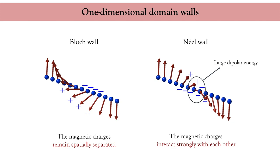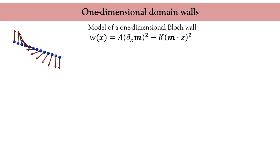Of course, this statement is not general and strongly depends on the details of the energy landscape, as we will see. So let's focus on the Bloch wall and see how it emerges from the competition between exchange and anisotropy. Here is the magnetic energy we are going to consider, composed of exchange and uniaxial anisotropy along z.